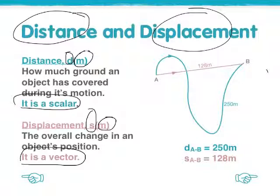And here we have a very simple illustration. Distance is the entire journey, which in this case would be 250 metres, and displacement is how far am I from where I once started. And that's a direct route, 128.